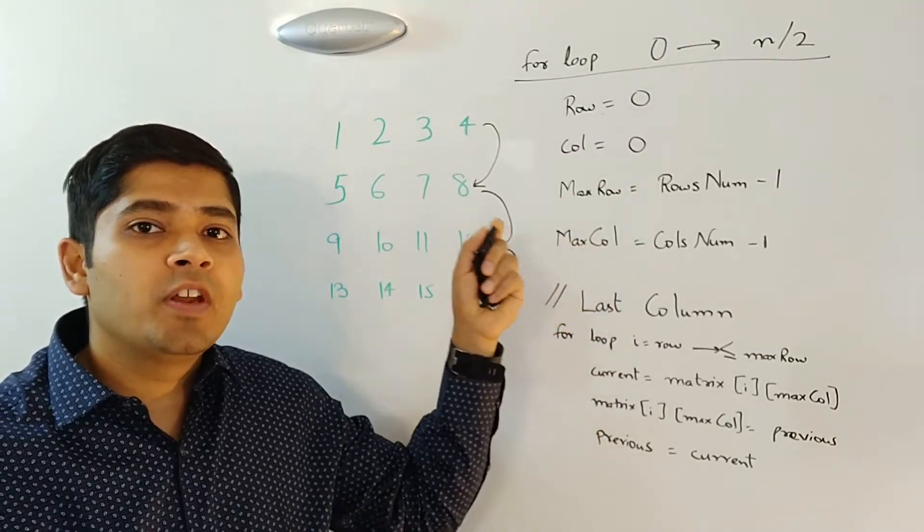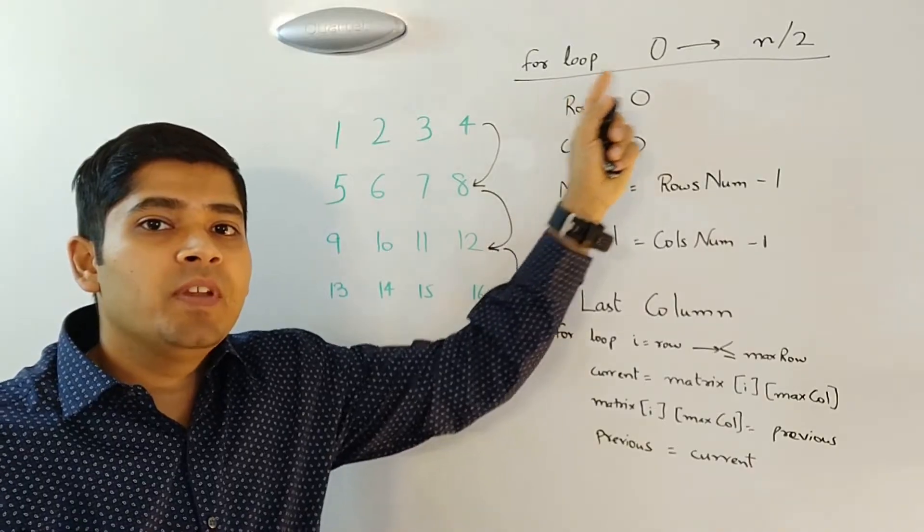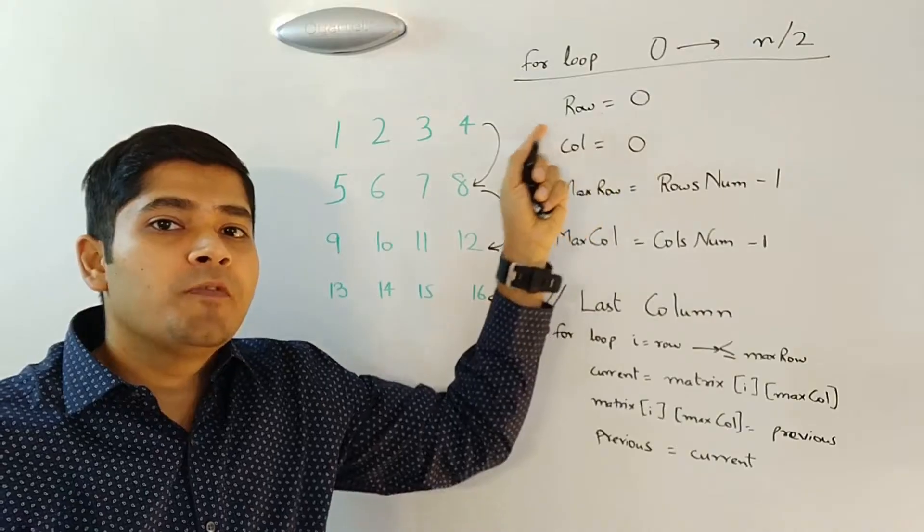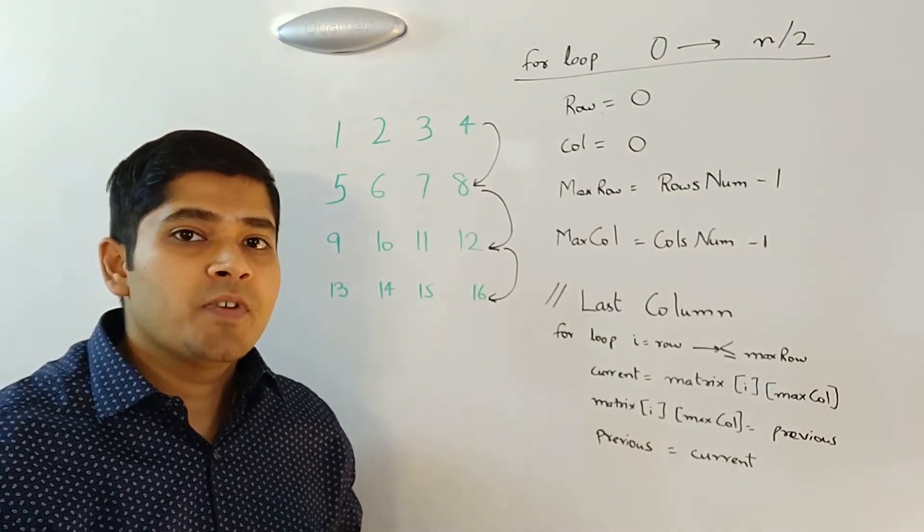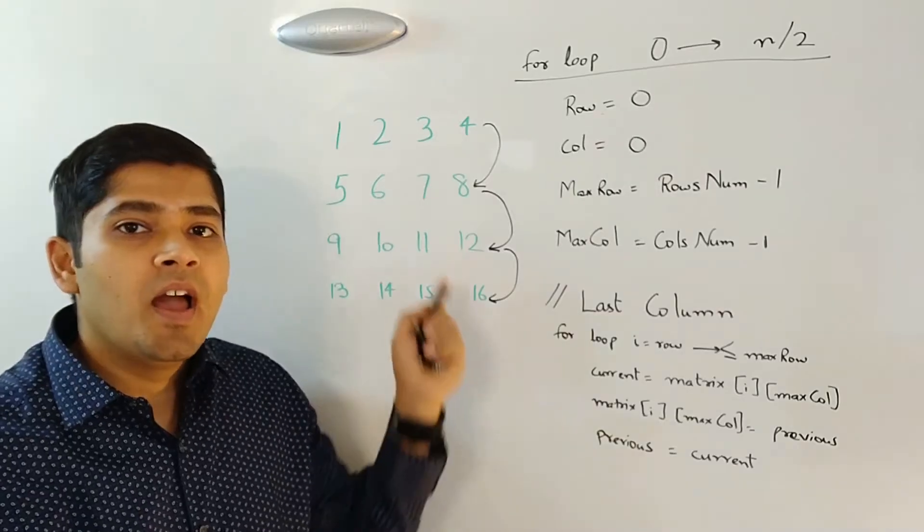In order to keep track of the ring with which we are working, we can have an outer for loop from 0 to n divided by 2, where n is the size of a square matrix. However,